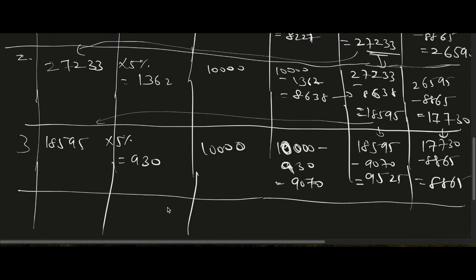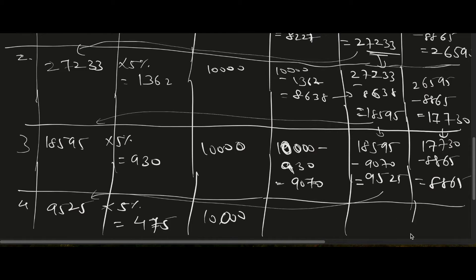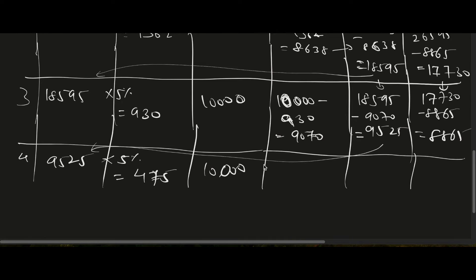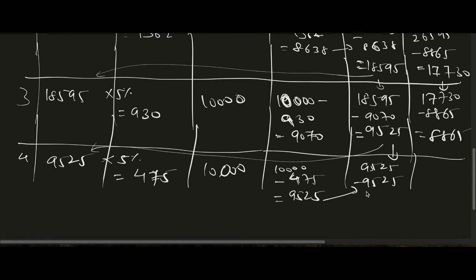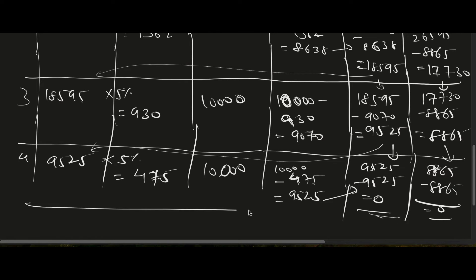For Year 4: opening liability is 9,525. Interest expense = 9,525 × 5% = 475. Lease payment is 10,000. Principal repayment = 10,000 minus 475 = 9,525. Ending liability = 9,525 minus 9,525 = 0. Right-of-use asset = 8,865 minus 8,865 = 0. Both the liability and the asset reach zero at the end of Year 4.